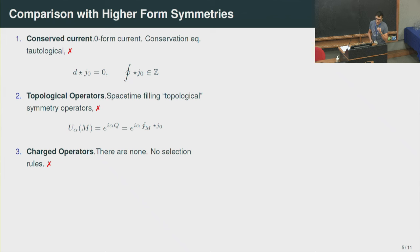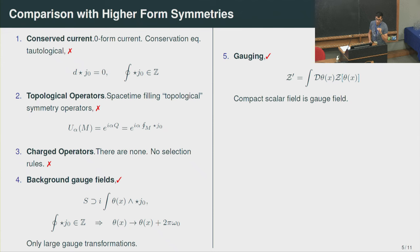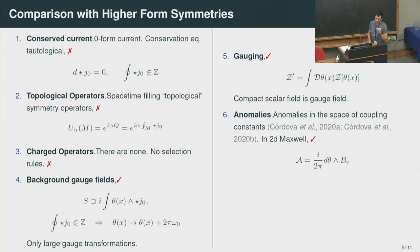There are also ways in which these symmetries are similar to others. One can couple background gauge fields — the background gauge field is this field theta, which takes values on the circle. One can think of the periodicity as a large gauge transformation for the minus-one form symmetry. We can gauge the symmetry by summing over field configurations of theta, and a compact scalar field can be thought of as a gauge field for a minus-one form symmetry. These symmetries can have anomalies, and they give interesting constraints on the IR physics of families of QFTs.